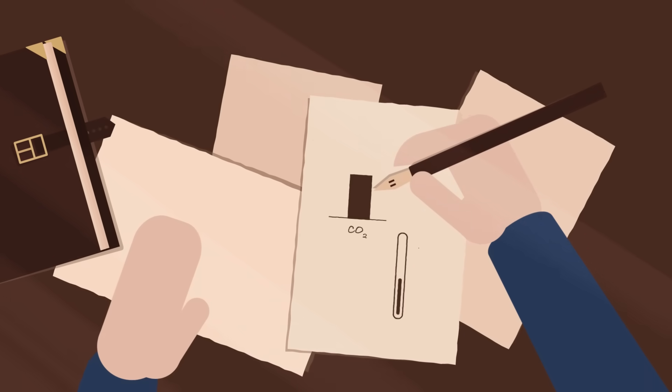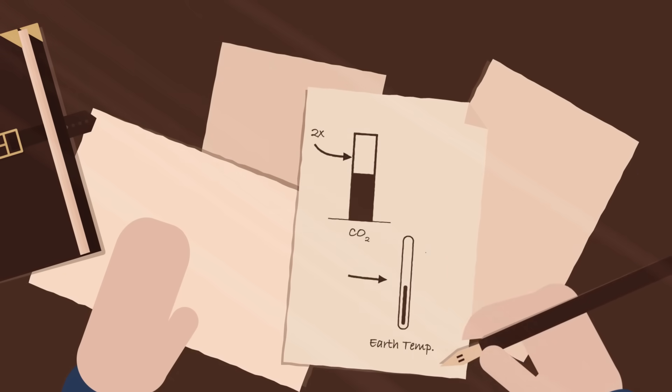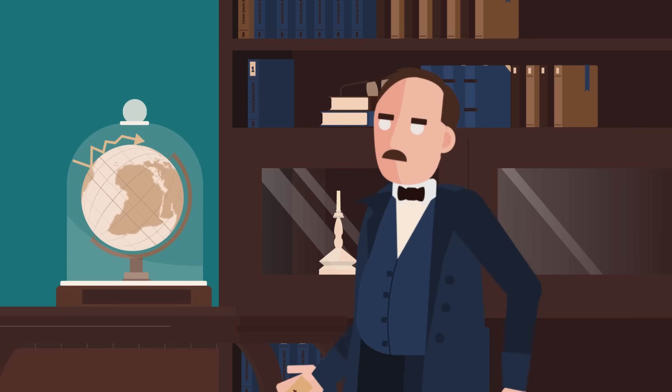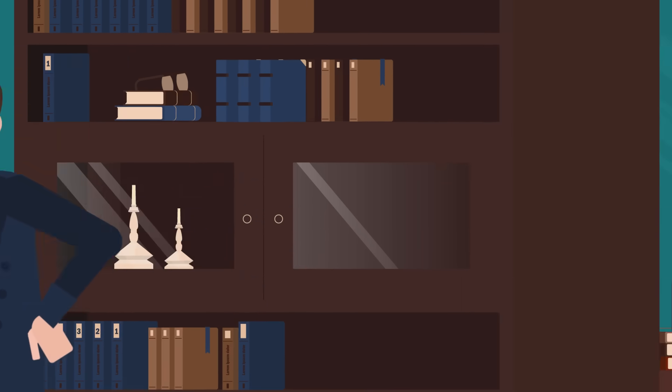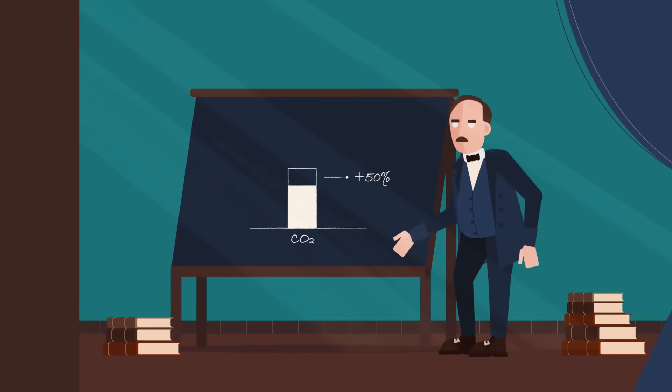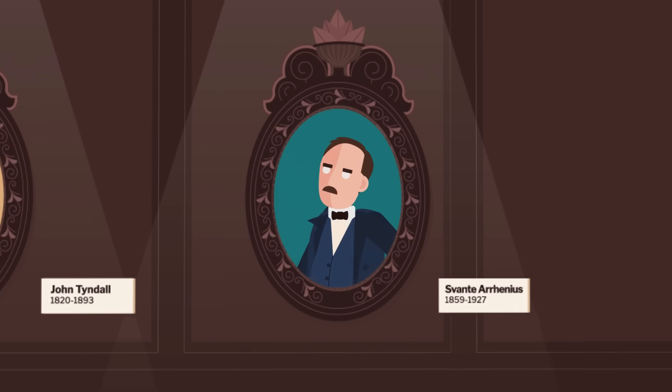He saw that if the amount of CO2 in the atmosphere were to double, the Earth's temperature would rise by a drastic 5 to 6 degrees Celsius. But even though he described the greenhouse effect, he was not concerned. In fact, he predicted it would take 3,000 years for CO2 levels to rise by 50%, causing climate change.